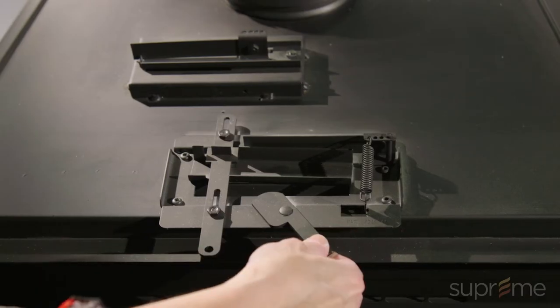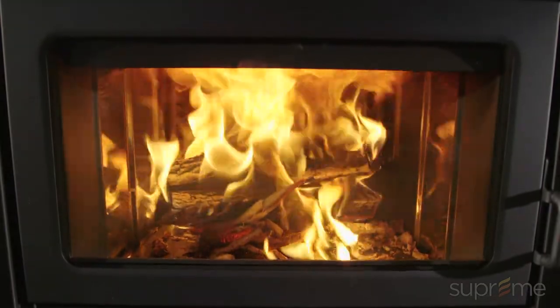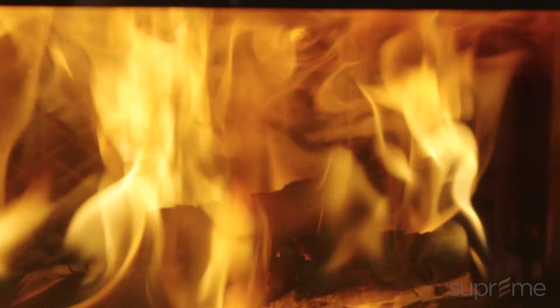When the selector handle is positioned to the left or towards the plus symbol, a maximum burn rate is achieved by allowing additional primary air to continuously enter the firebox. By doing so, the wood will burn at a faster rate.